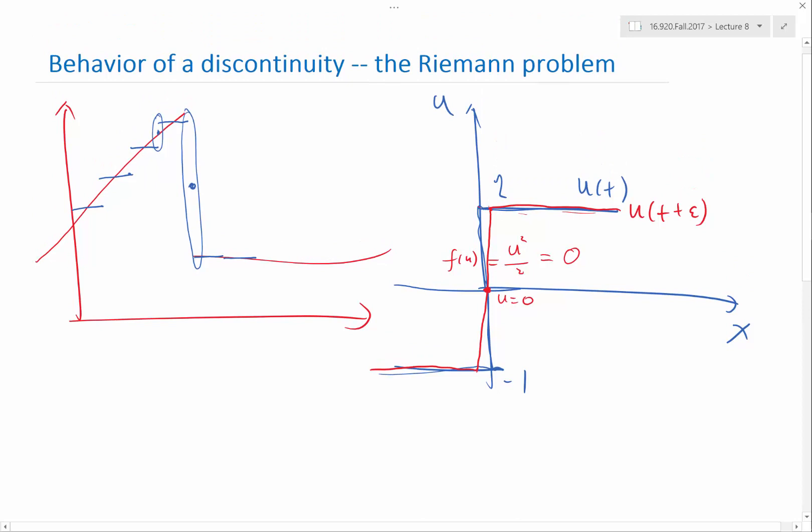So what's the behavior of the discontinuity in absolute amount of time? That problem is called the Riemann problem. The Riemann problem is how a discontinuity would evolve for a tiny bit of time.